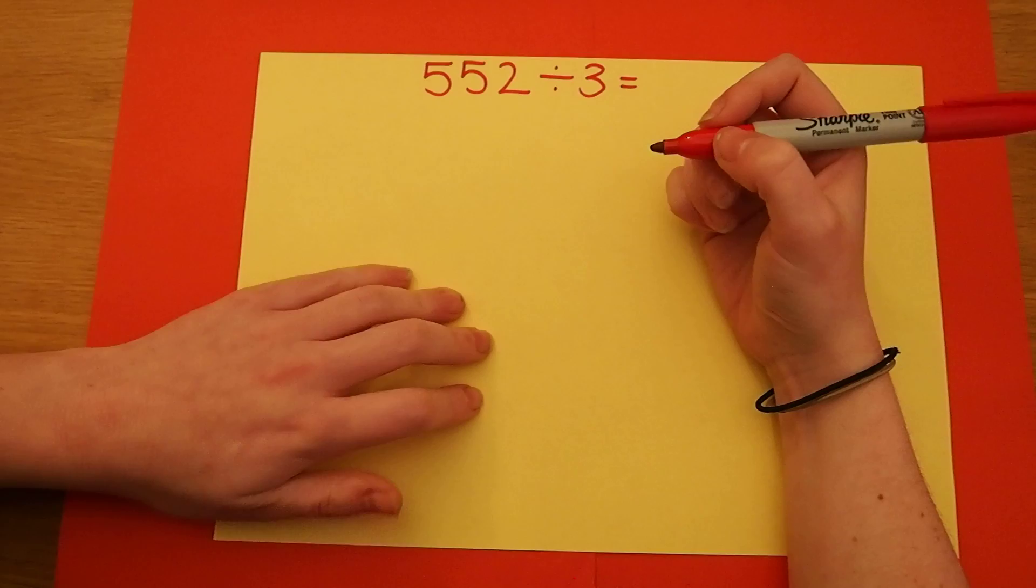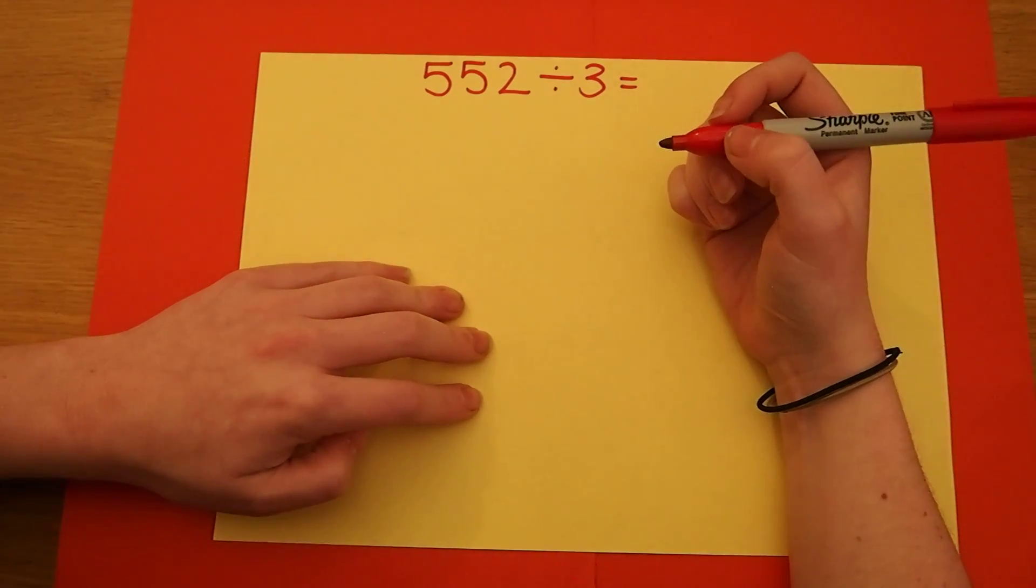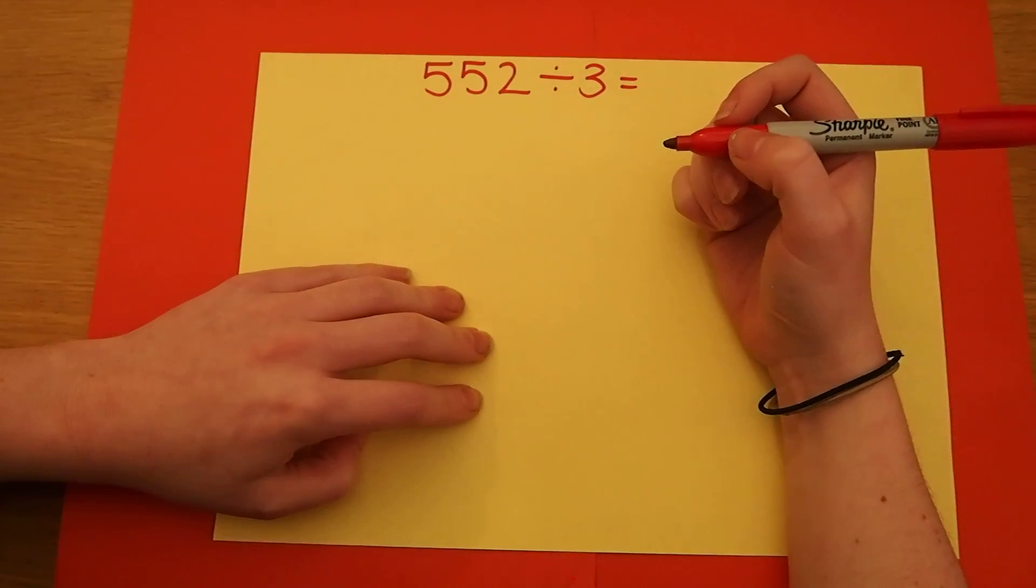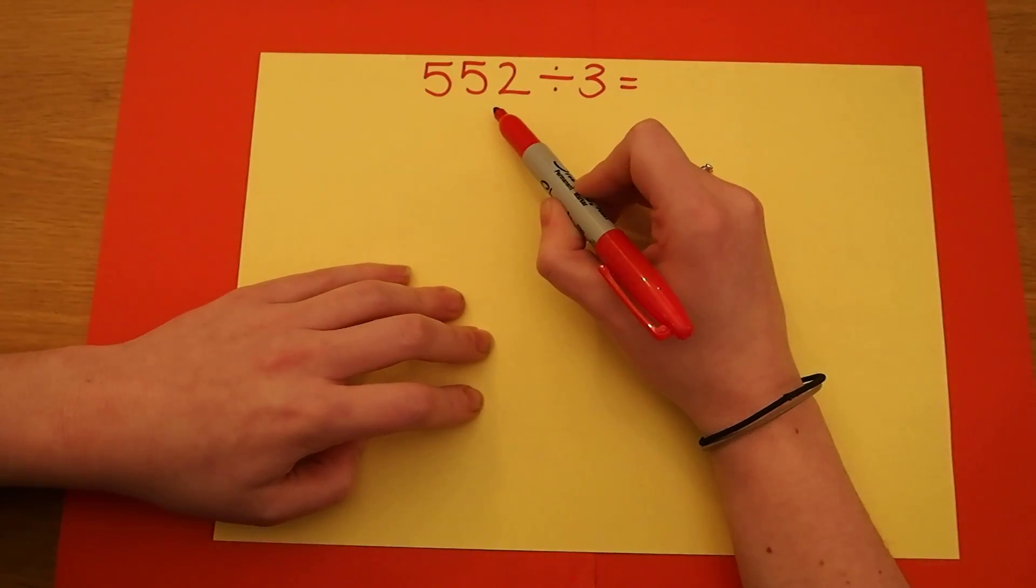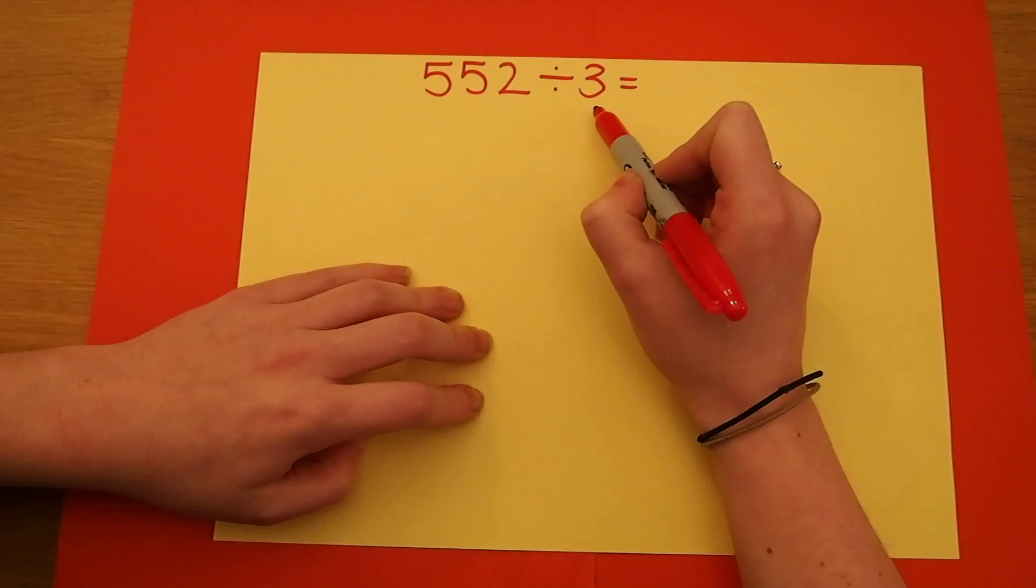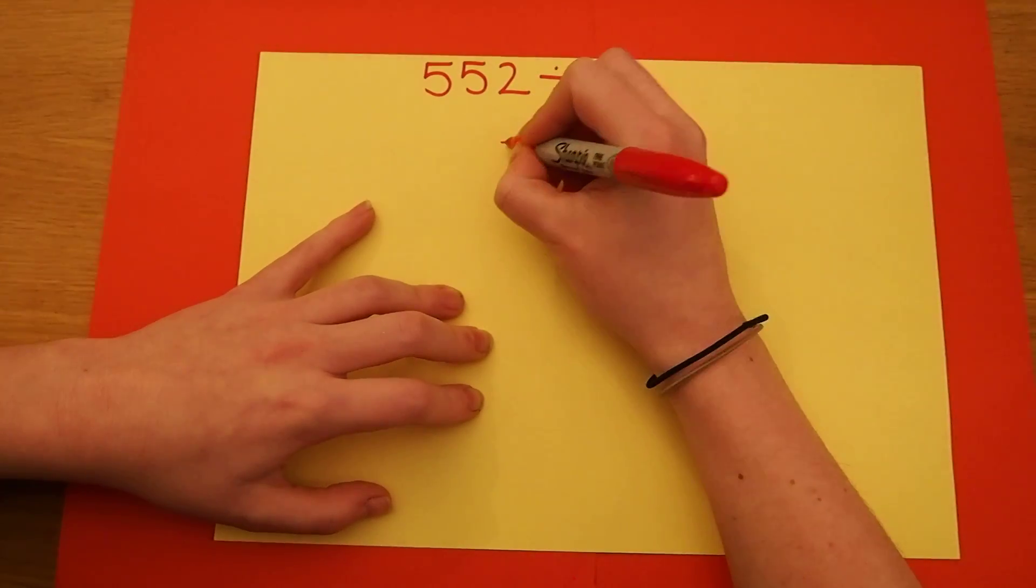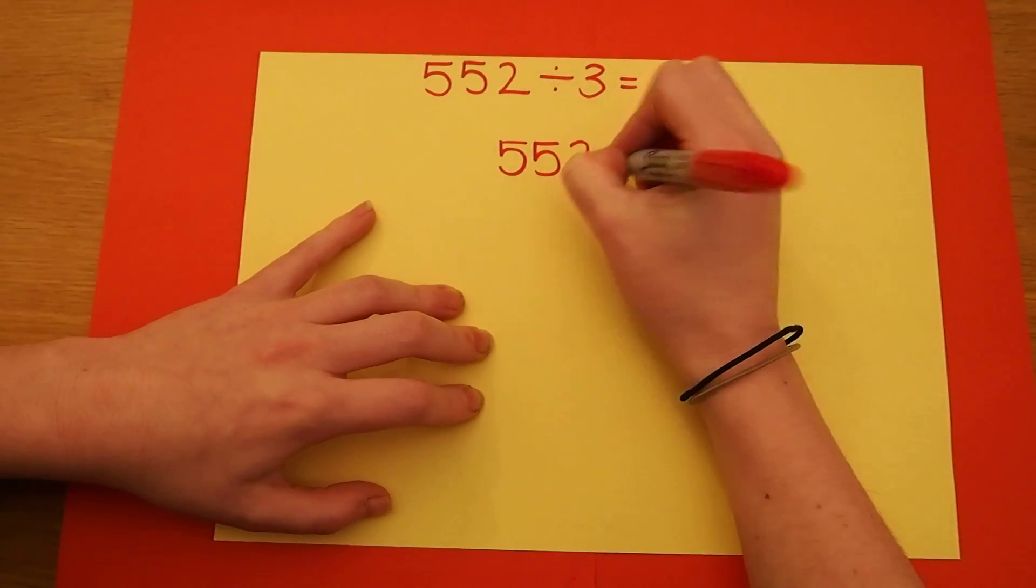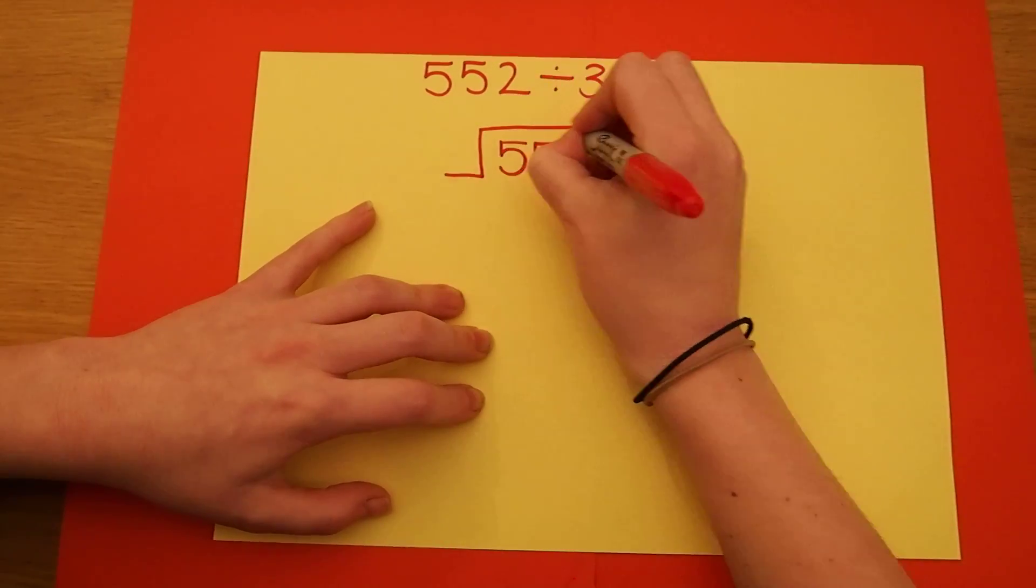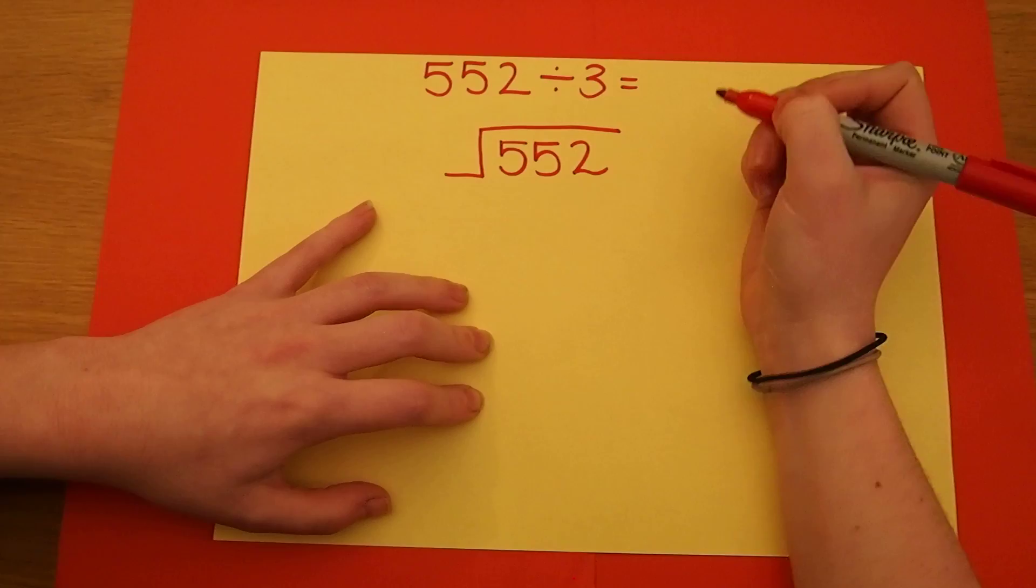We're going to be looking at the long division calculation method, but this time slightly harder. My calculation is 552 divided by 3. I start by putting the number I'm sharing underneath the bus stop and I put the 3 on the outside.